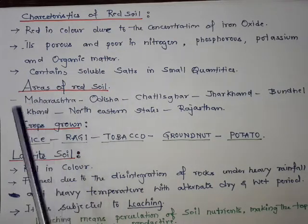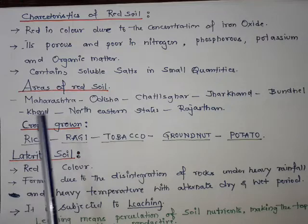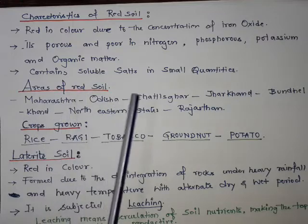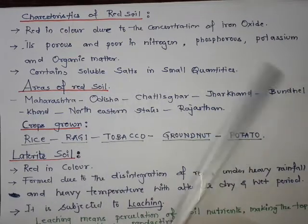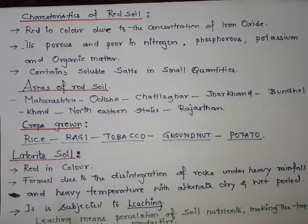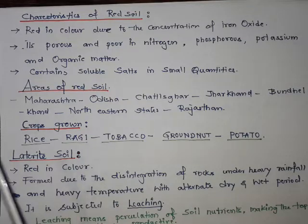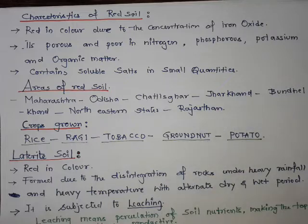Areas where red soil is found in India include Maharashtra, Odisha, Chhattisgarh, Jharkhand, Bundelkhand, northeastern states, and Rajasthan, along the slopes of the hills. Crops grown on red soil include rice, ragi, tobacco, groundnut, and potato.